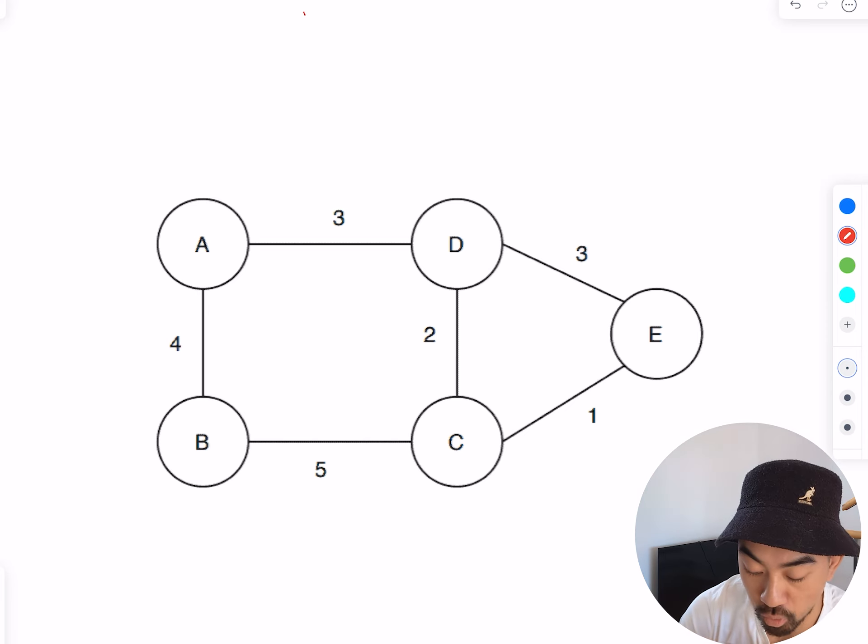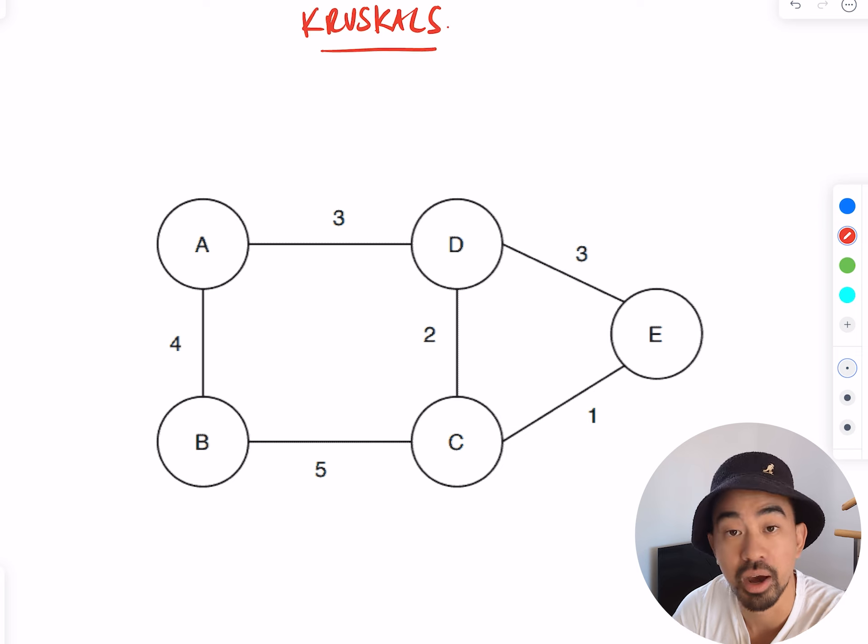What's up guys? Today we're going to do Kruskal's algorithm. Kruskal's is a method to find the minimum spanning tree, which is basically connecting all the vertices using the smallest weights but having no loops.